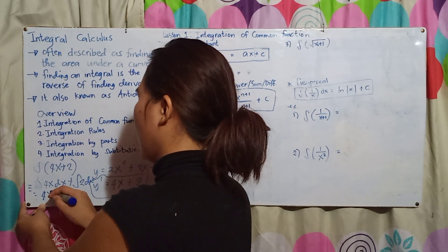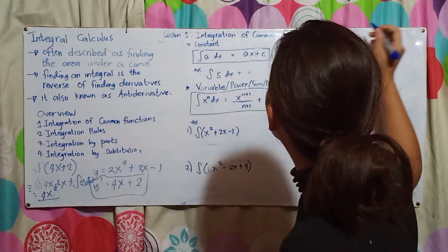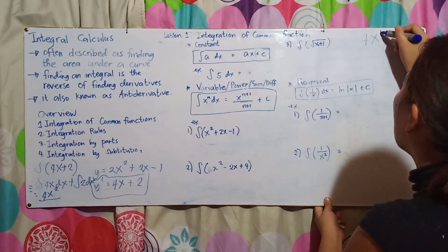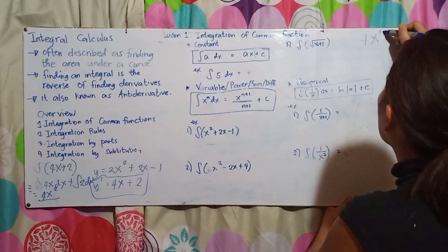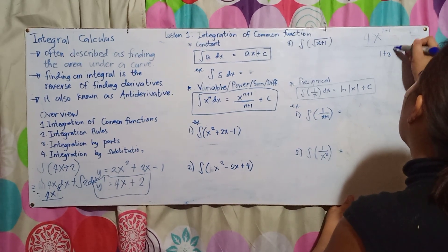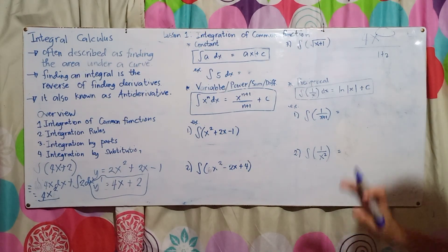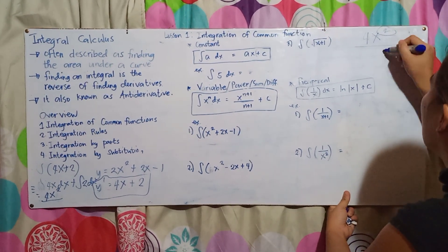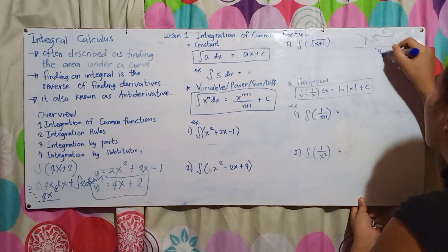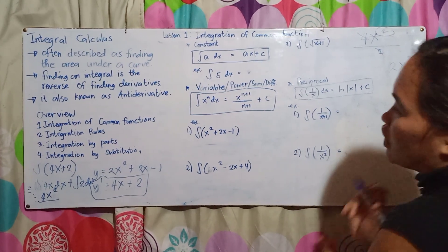For ∫4x dx: we add 1 to the exponent (1+1=2), giving 4x²/2. For ∫2 dx: since there's no variable, it becomes 2x. So 4x²/2 simplifies to 2x².